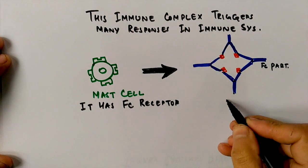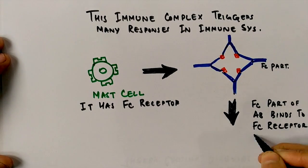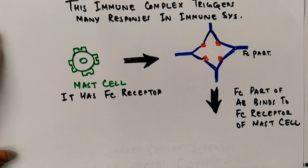Mast cell has the FC receptor. It has the ability to bind the antibody, the FC region of antibody, and triggers the immune response or we can say inflammatory response also.